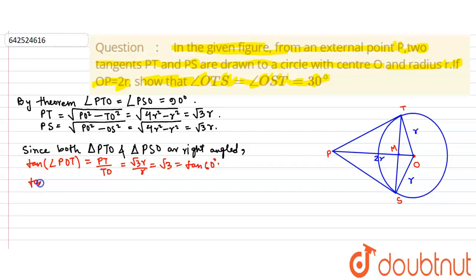Similarly, tan of angle POS equals PS by OS, that is equal to root 3r by r, which is again root 3, which is again equal to tan 60 degrees. So from this we can conclude that angle POT equals angle POS equals 60 degrees.